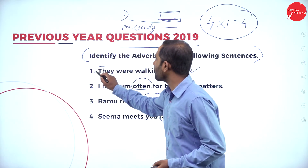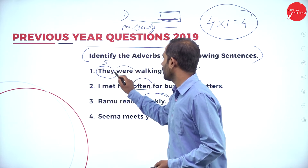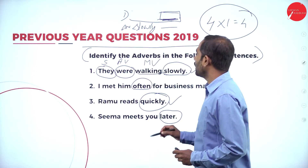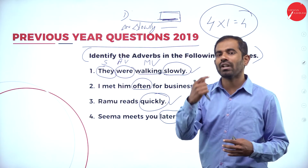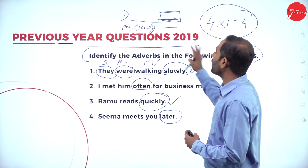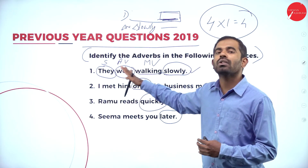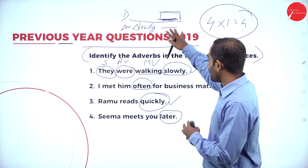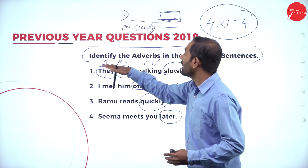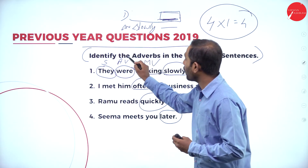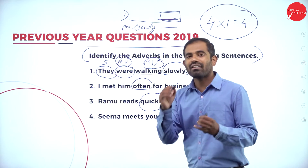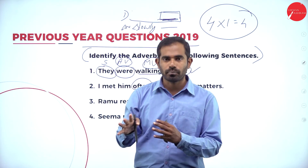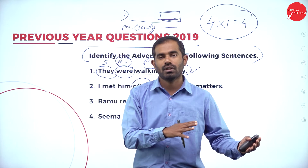Let me give you an extra tip. In the sentence 'They were walking slowly,' they is the subject, were is the auxiliary or helping verb, and walking is the main verb. While solving one grammatical part, you can go on questioning what the other grammatical parts are. This helps you develop your grammar by brushing up previous knowledge alongside what you are currently learning.